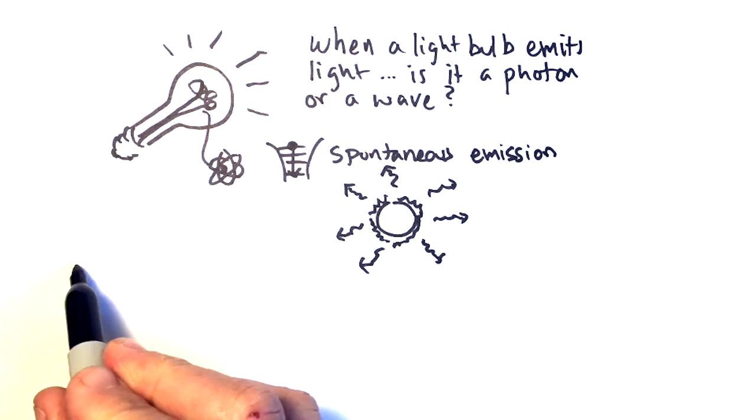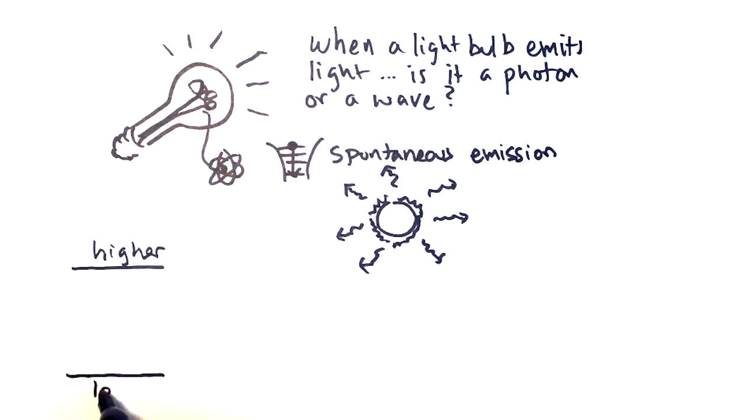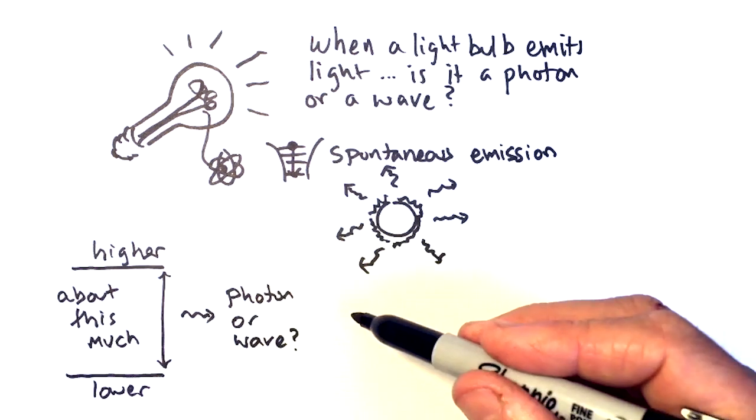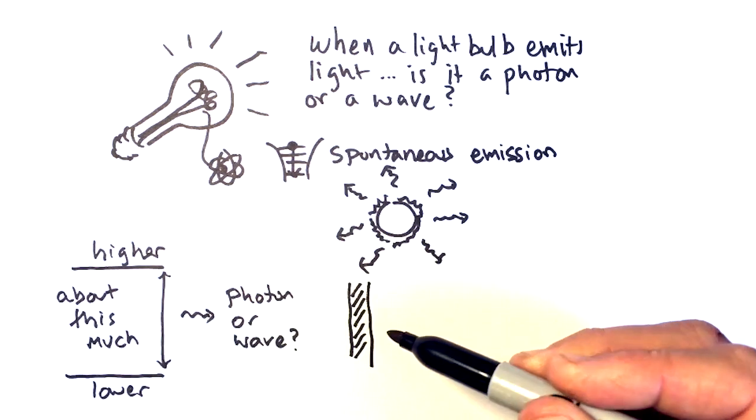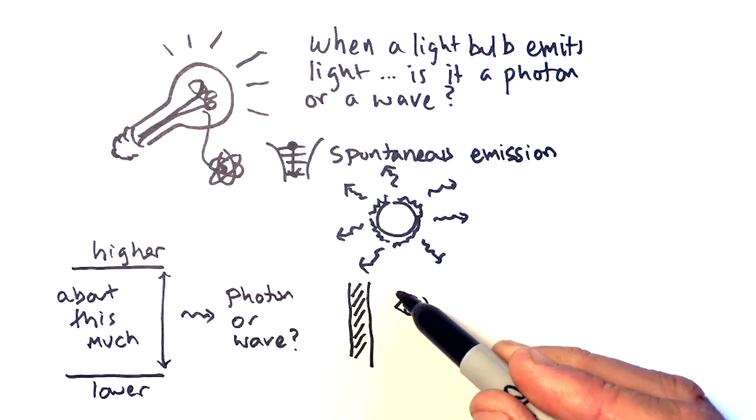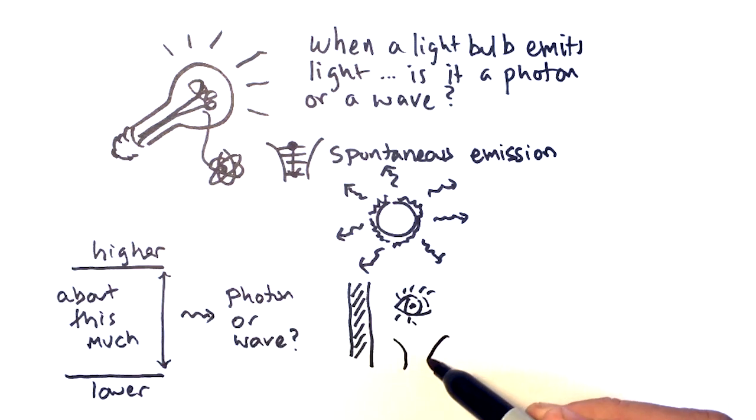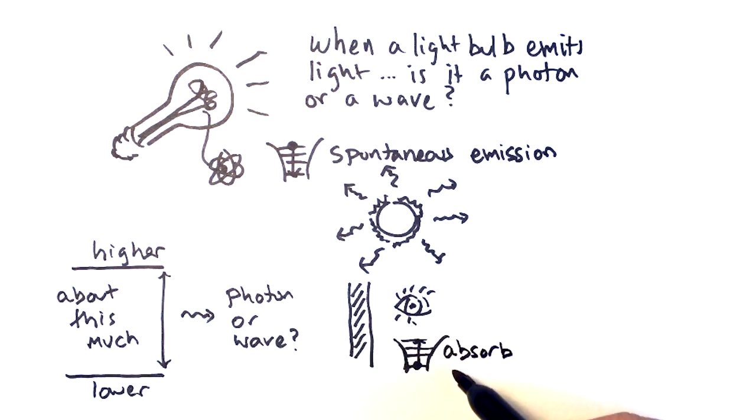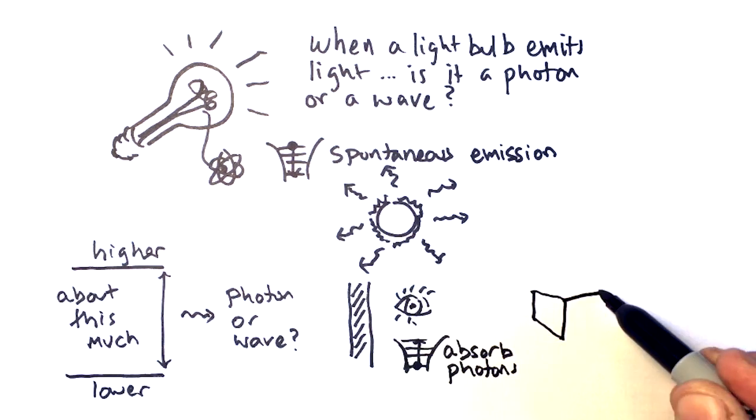It's actually responsible for most of the light you see from the Sun. Spontaneous emission involves a transition from a higher energy level to a lower one emitting a specific amount of energy. But is that a photon or a wave? Well, it depends on how you detect it. If the light is absorbed by a wall or your eye, the molecules in the wall absorb light in the form of individual quanta, photons.